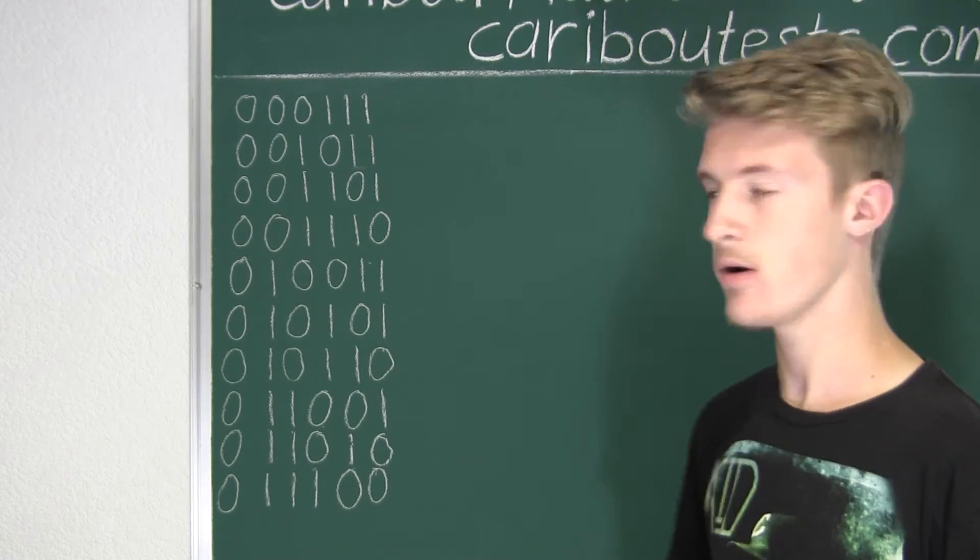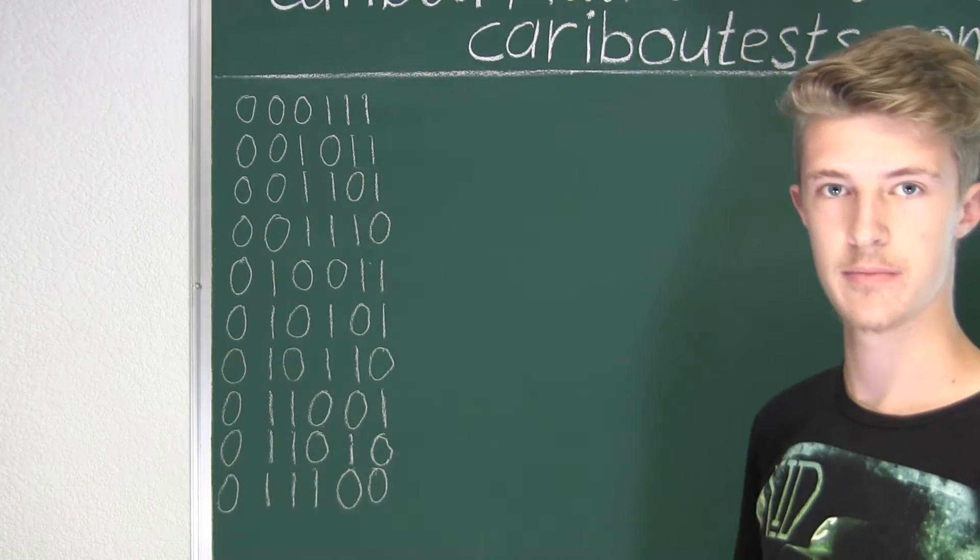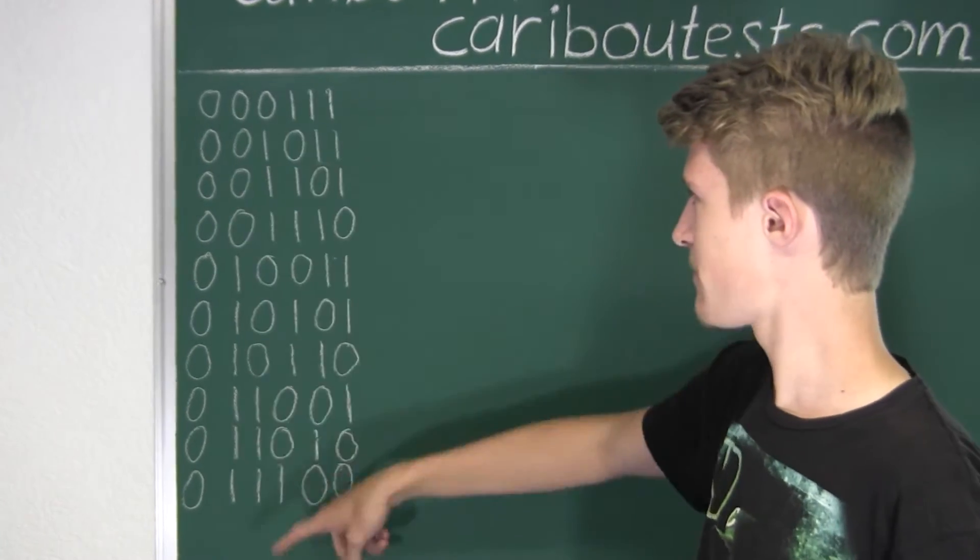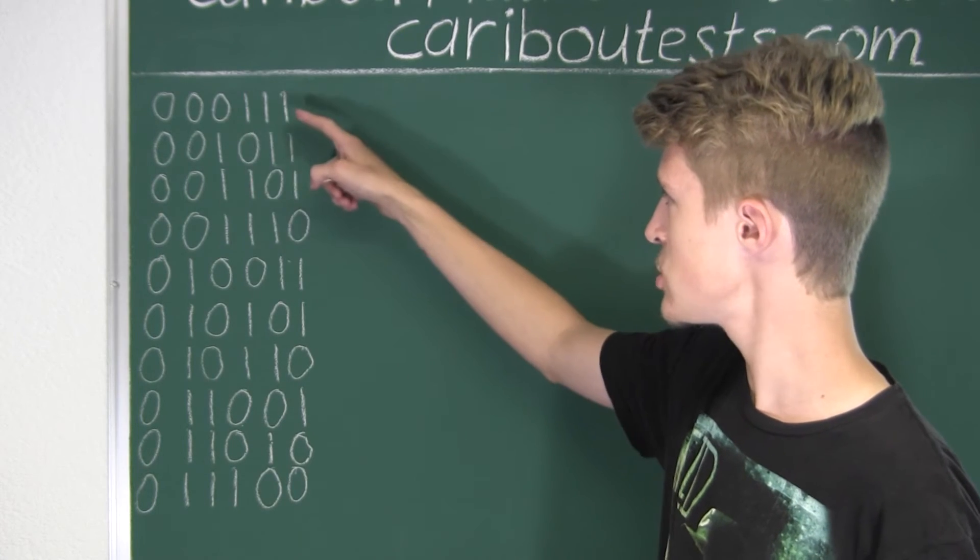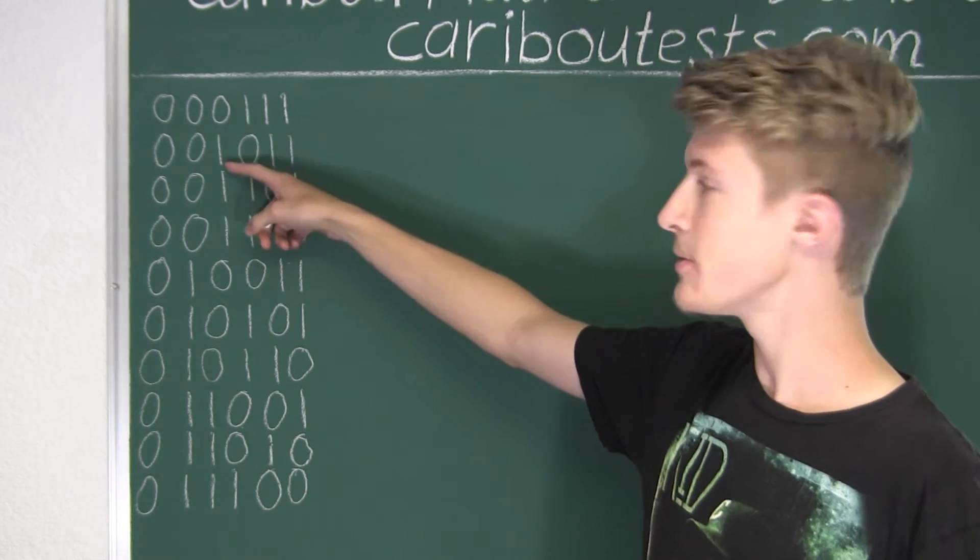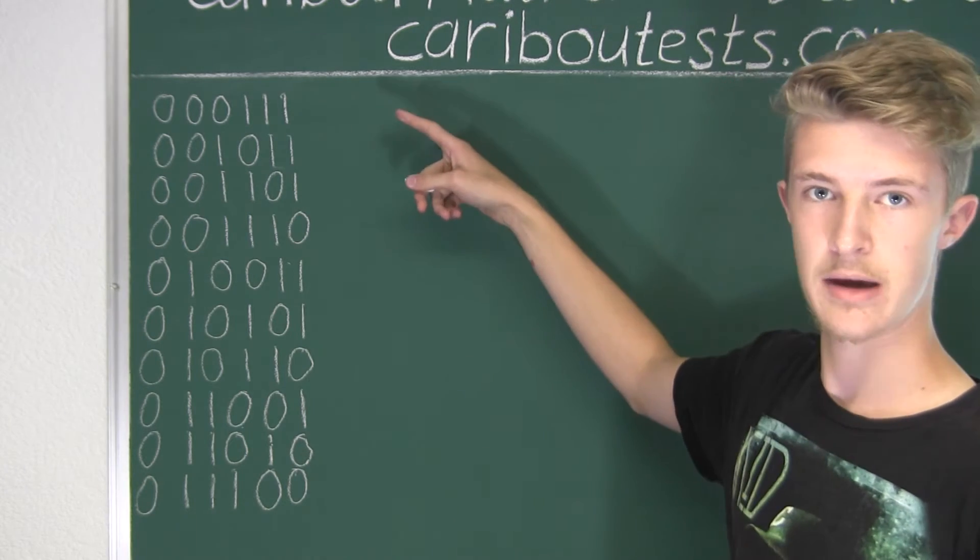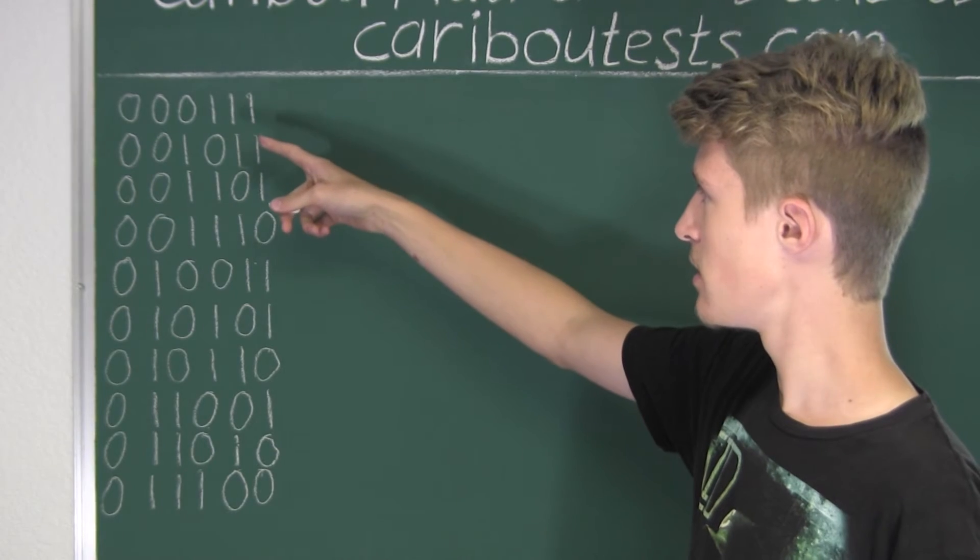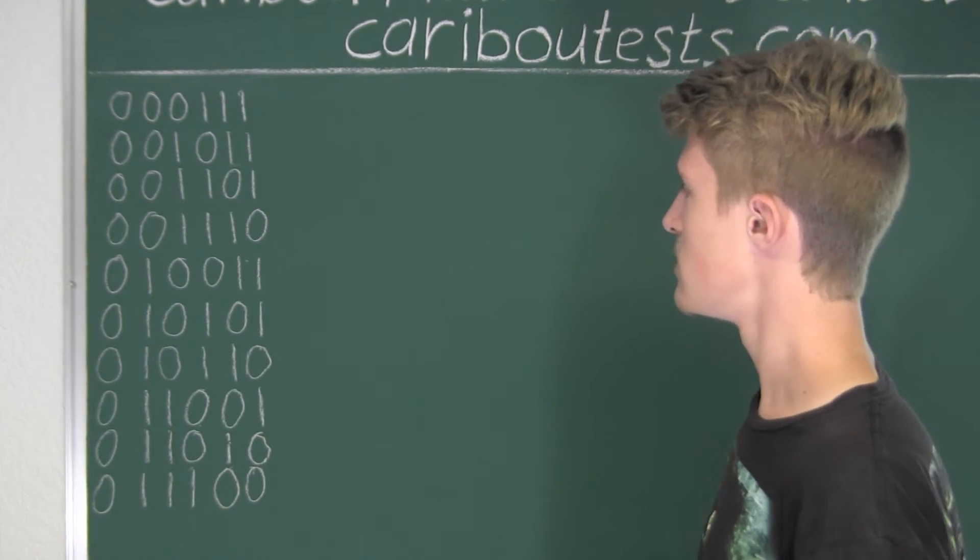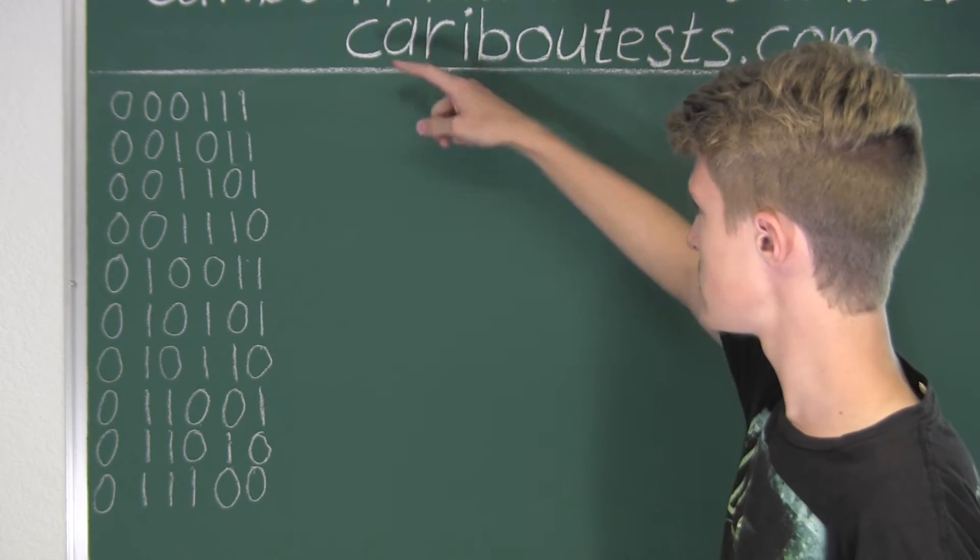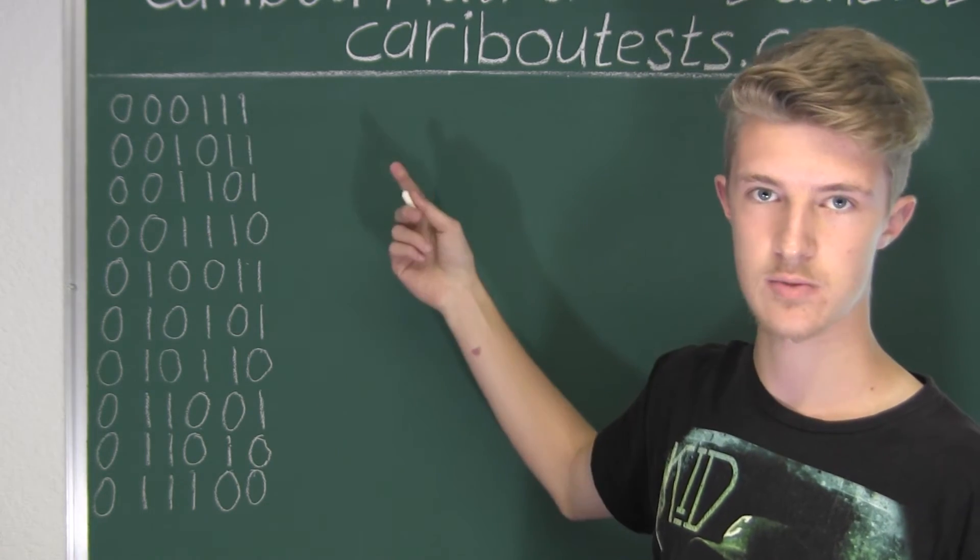All right, so now all the remaining numbers would have a 1 at the beginning of the number. So now here, for all these numbers, they all start with a 0, and that means for the remaining five positions, there are two 0s and three 1s. So now for all these remaining numbers that start with a 1, instead of having the five remaining positions as two 0s and three 1s, now we would have three 0s and two 1s.